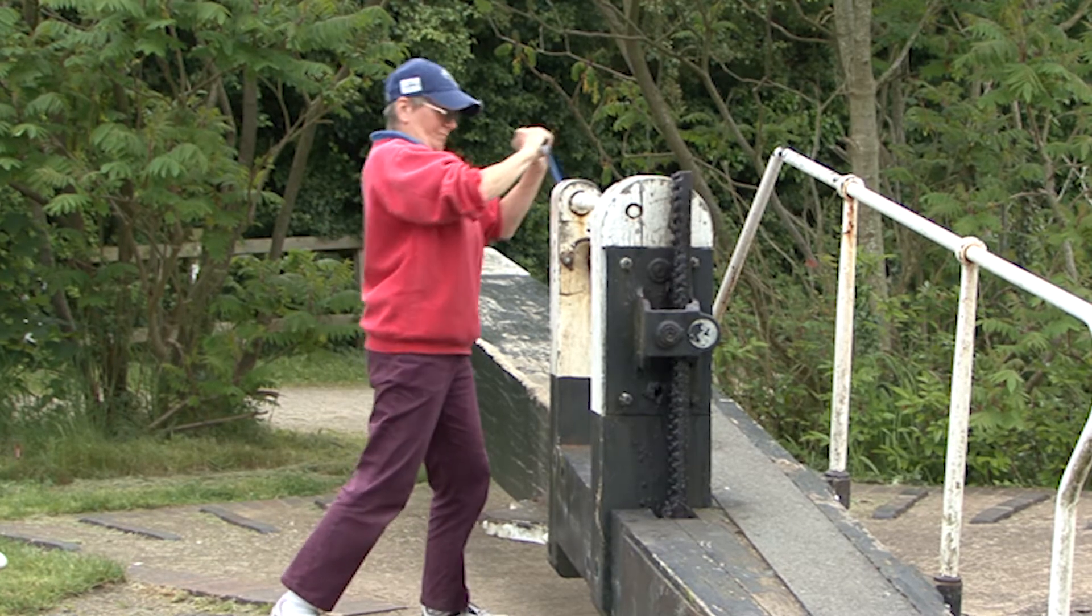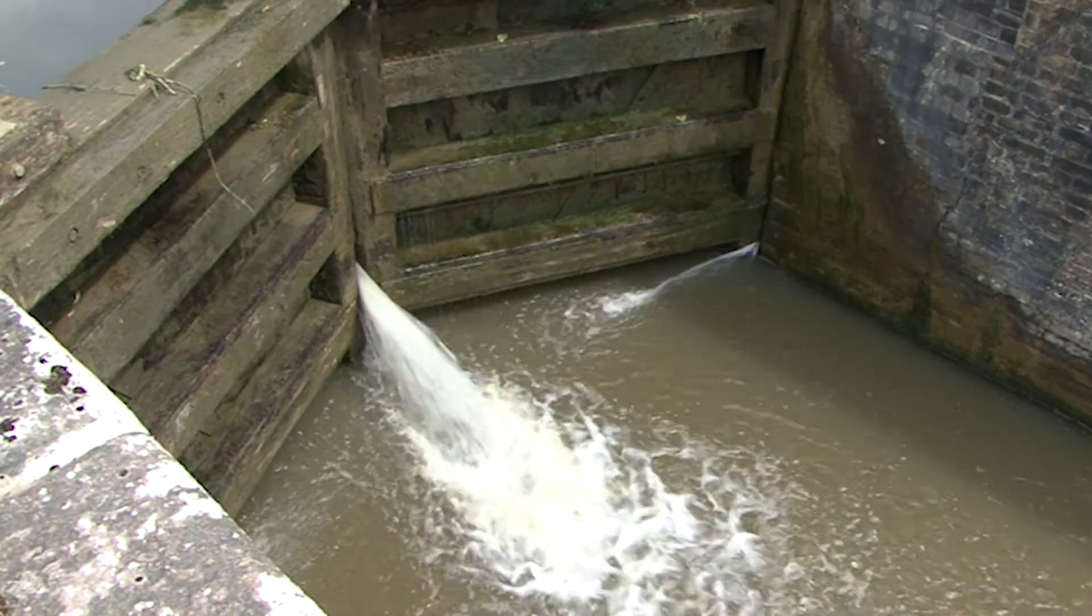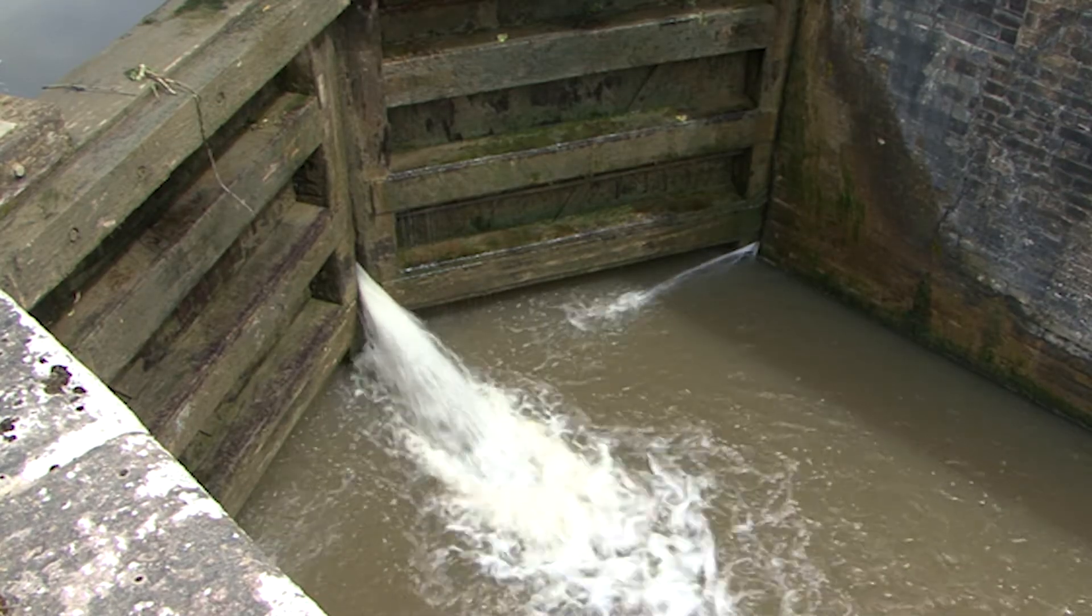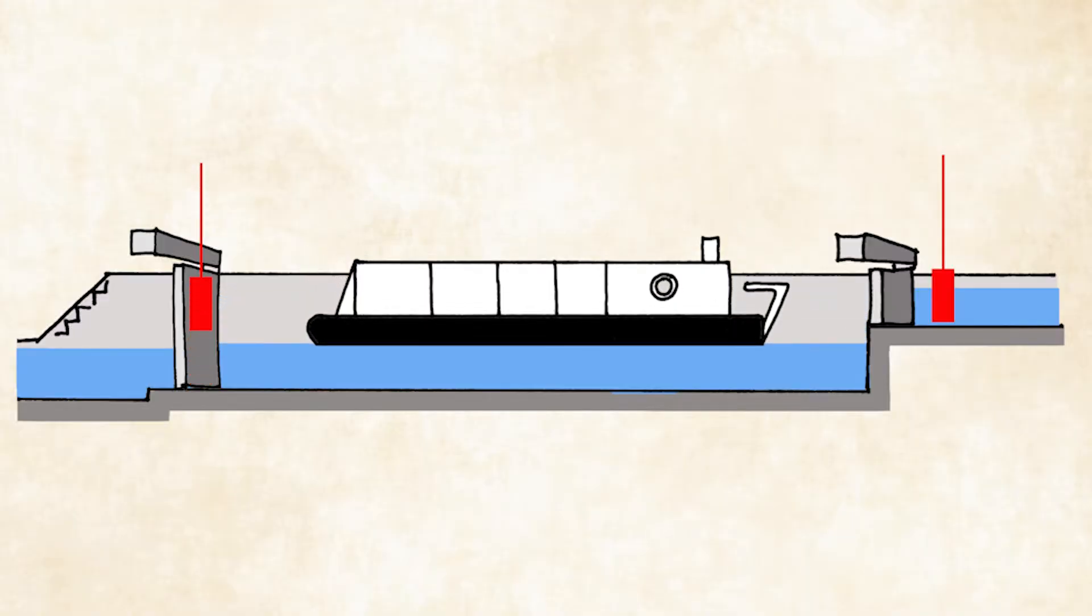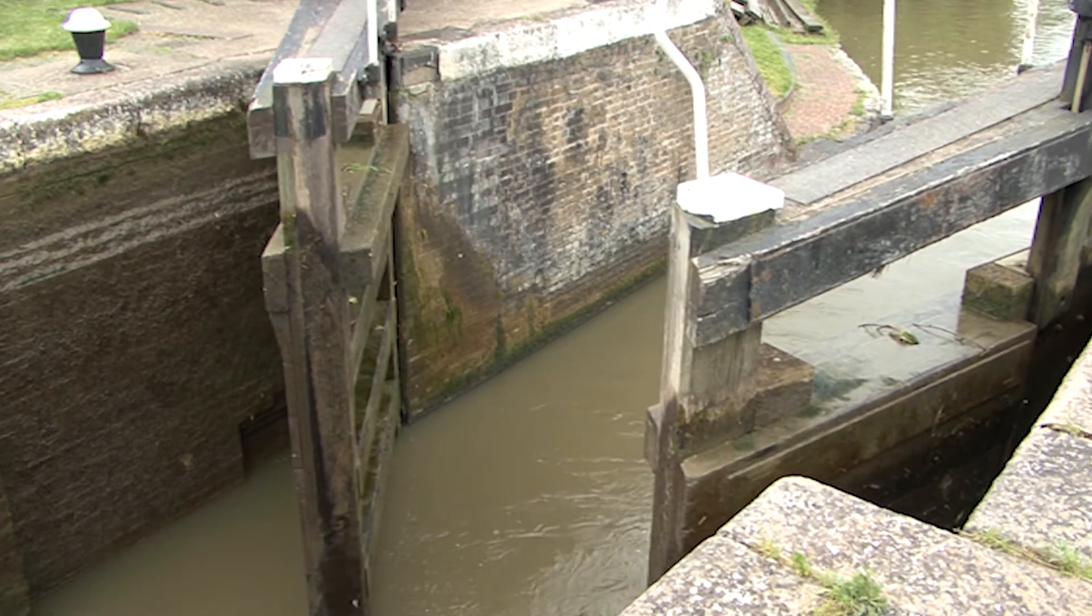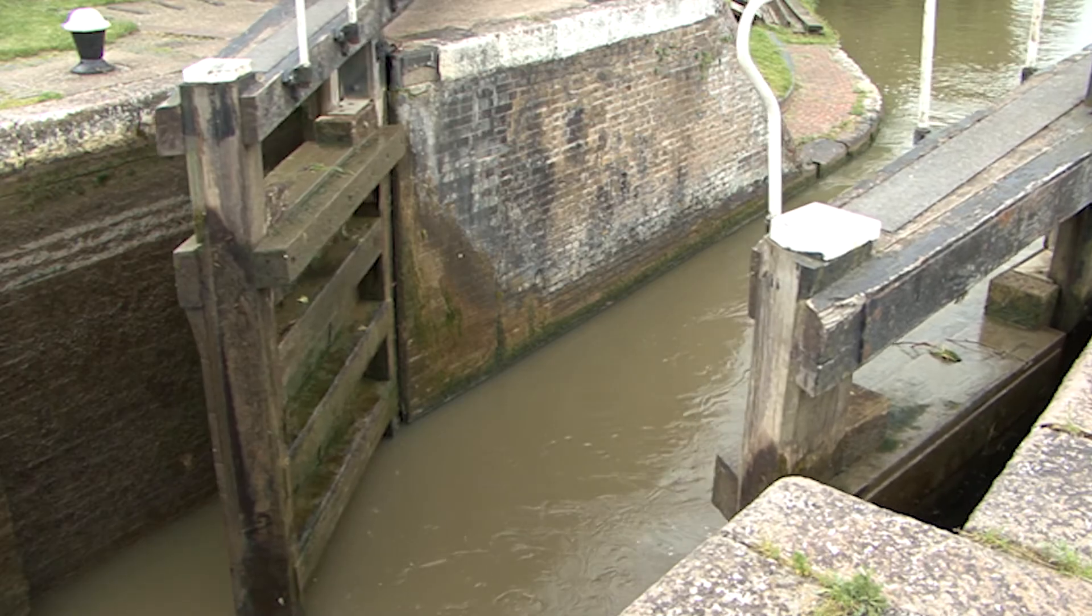The lower level paddles are then opened to allow water to run out of the lock to the lower level. As the water leaves the lock the boat lowers. When the level of the water in the lock is the same as the lower part of the canal, the lower gates can be opened and the boat can leave.